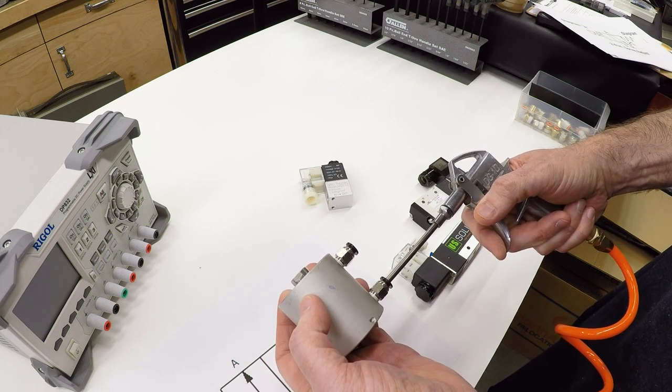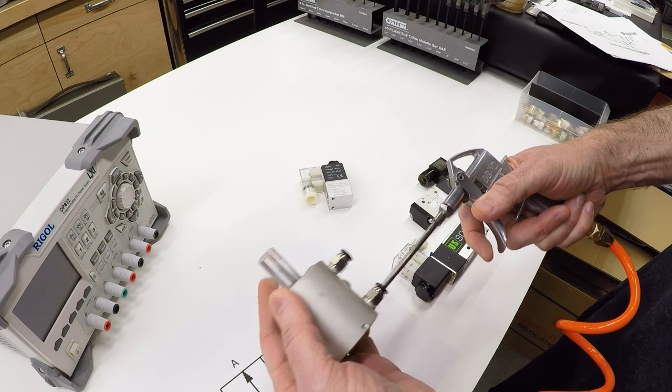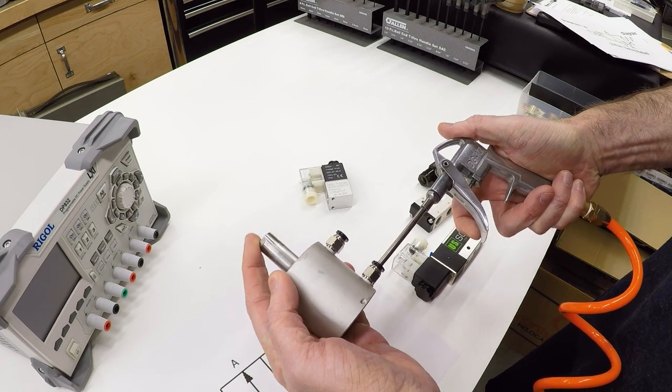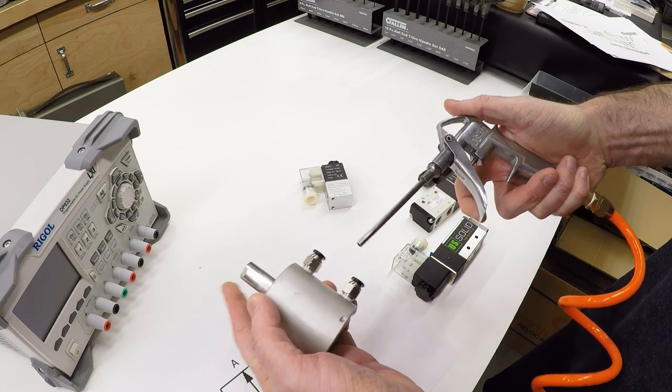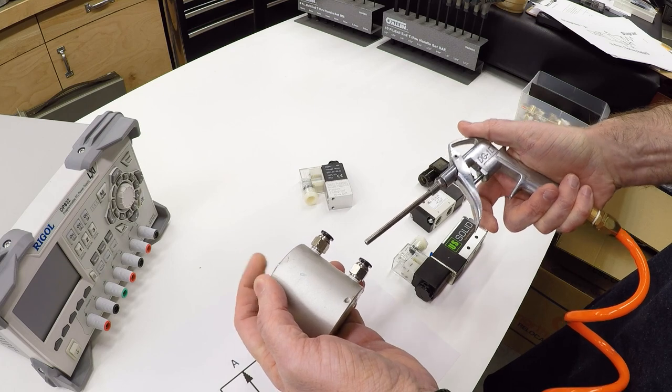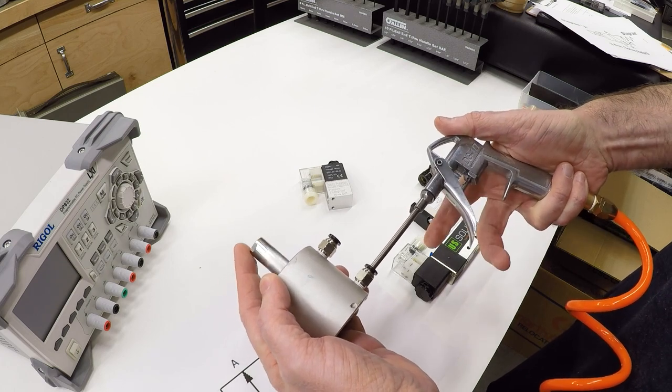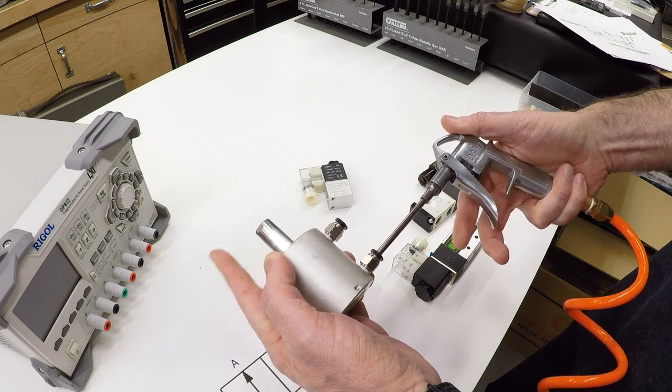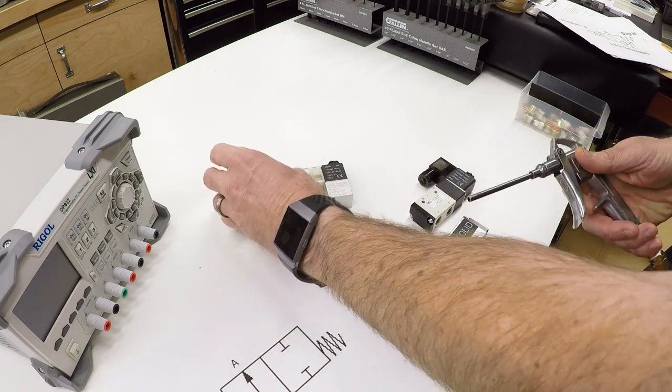However, you can't just turn off the air. In this case, I have extended it, and I've closed the valve, so there's no more air pressure. But I still can't push this back, because in order to push this back, the air has to be able to flow back out of this port. So until I actually vent it to the atmosphere, it can't return. That's what the next kind of valve does.